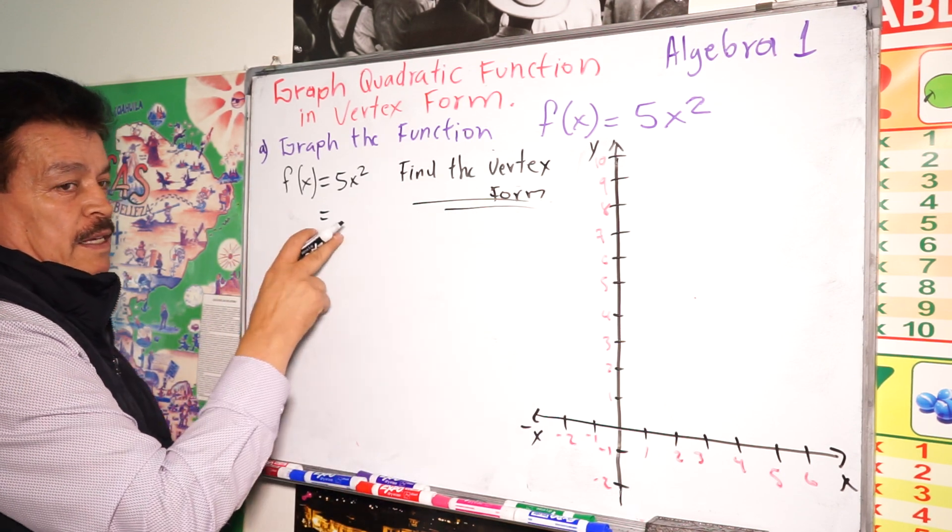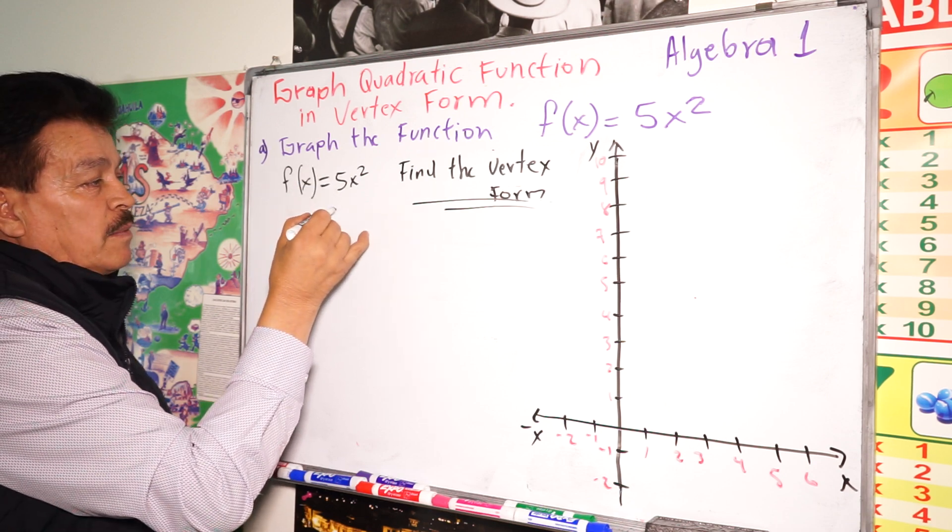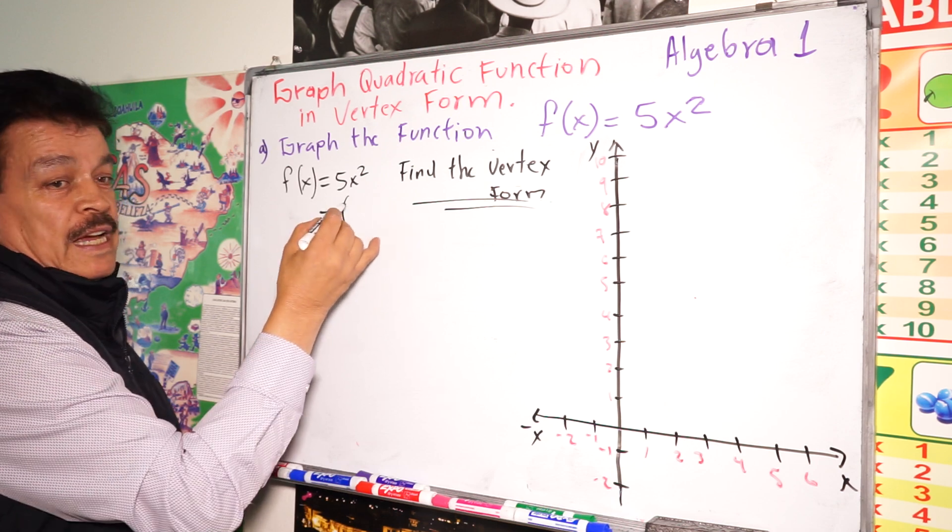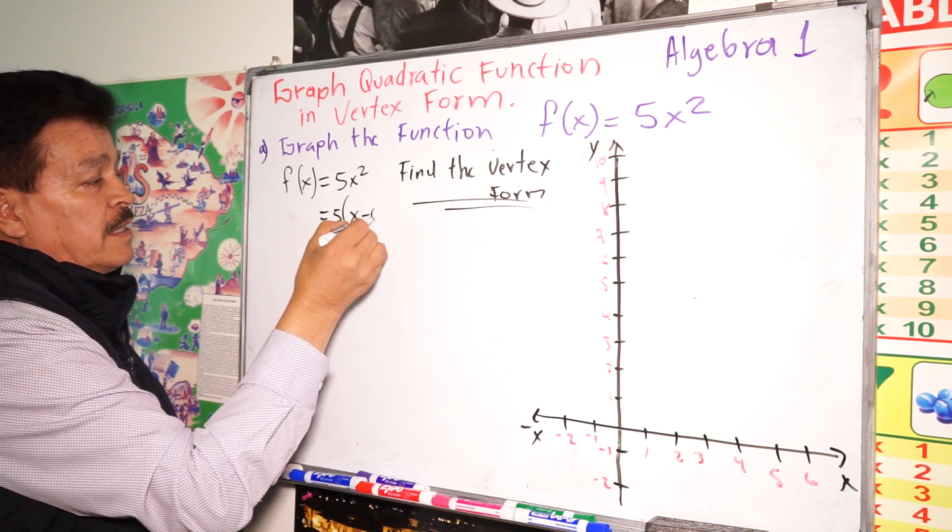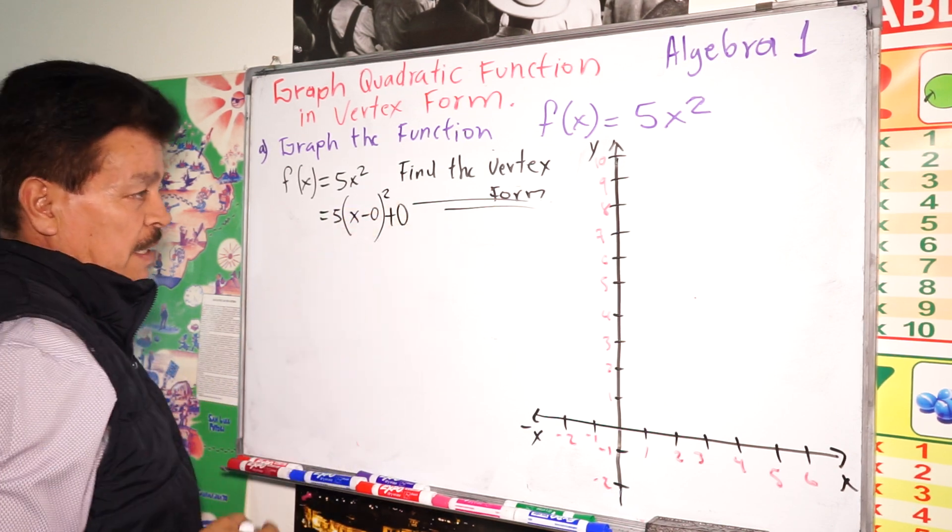Remember the formula. This will be 5(x - 0)² + 0. h is 0, plus 0.